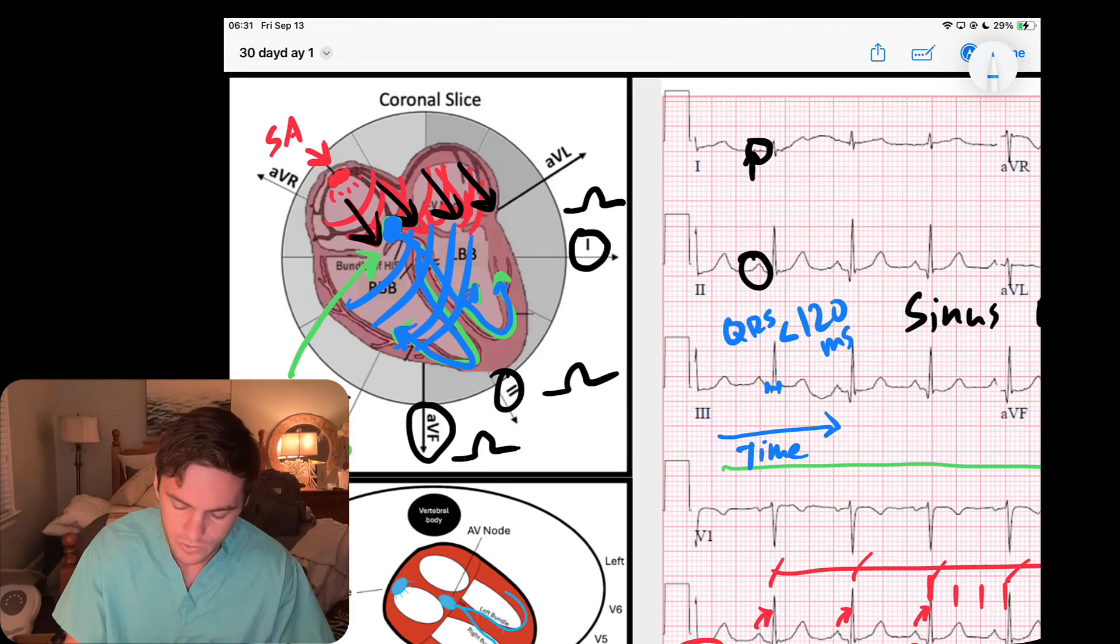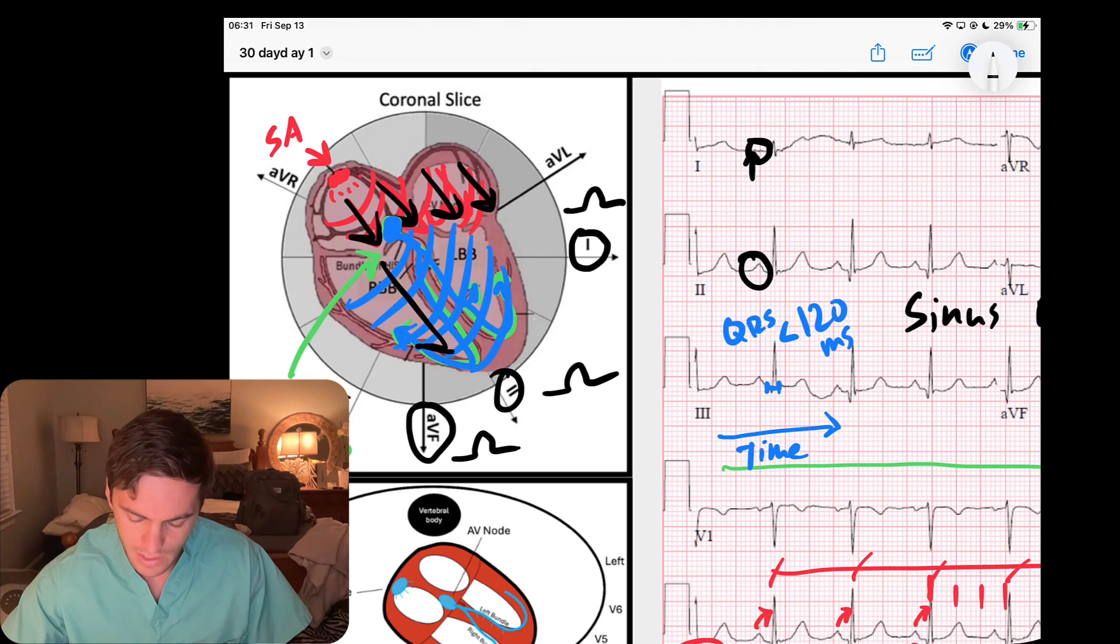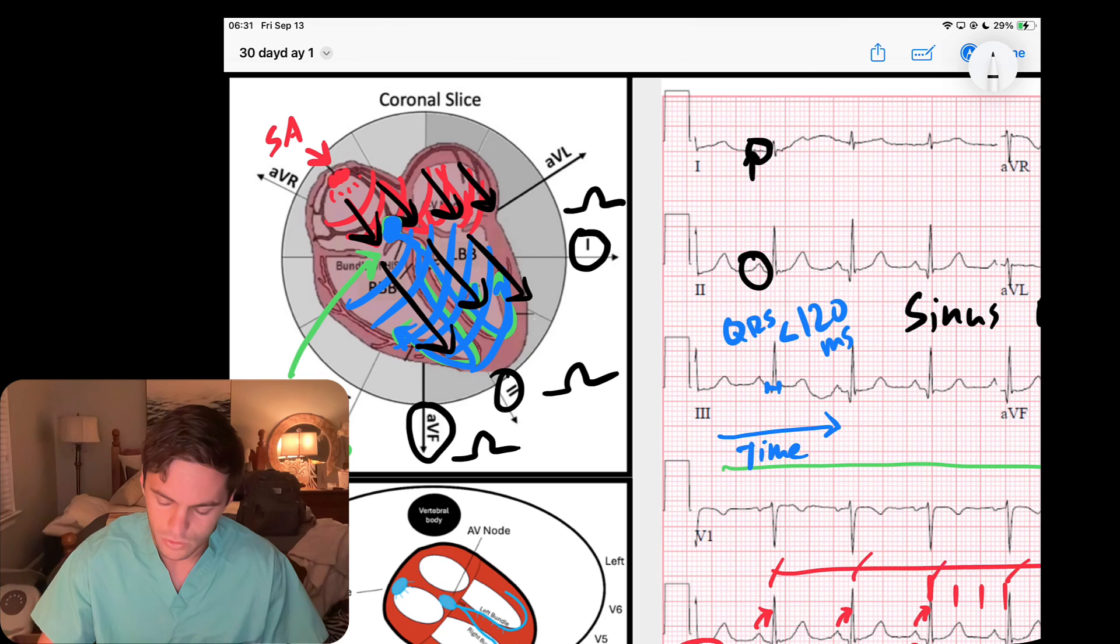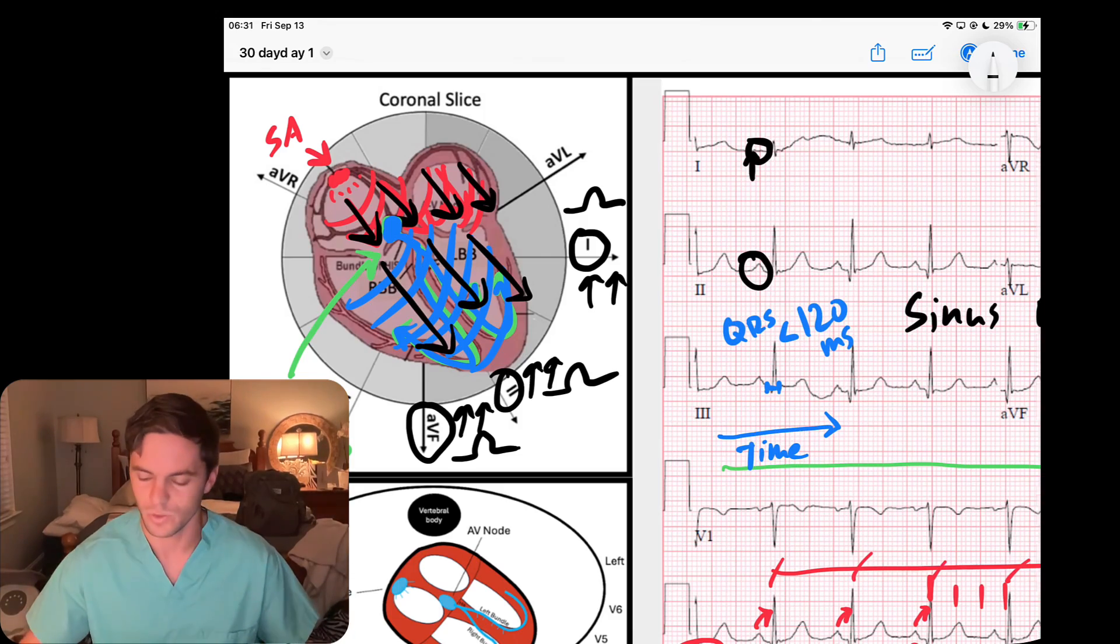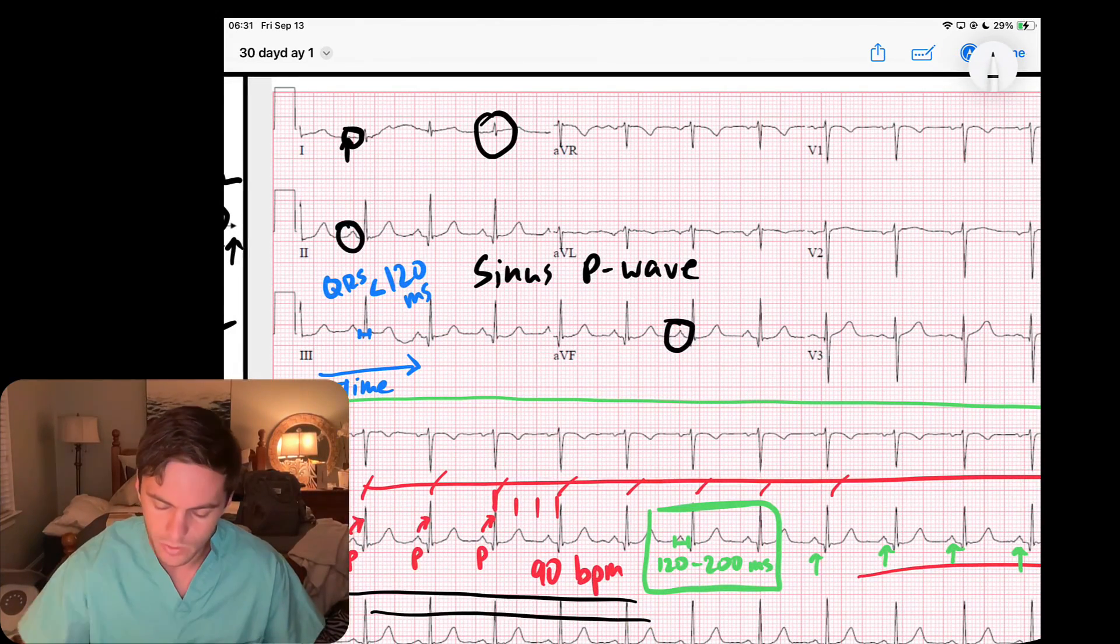We also know that the QRS is going to produce a wave of depolarization across the ventricles. Look at the direction it's headed—it's headed, just like our atrial P waves, down into the left. So my QRS axis on these coronal planes should also be upright in leads one, two, and AVF.